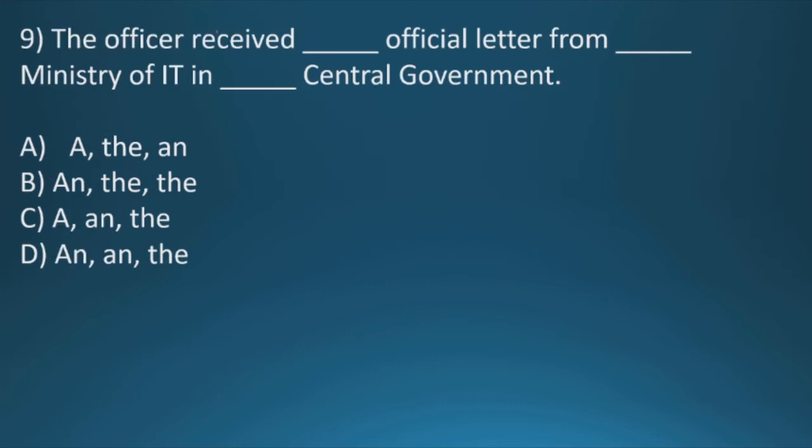Question nine: The officer received dash official letter from dash ministry of IT in dash central government. The correct answer would be: the officer received an official letter, because here it is O which is a vowel, from the ministry of IT because there can be only one ministry of IT, in the central government because there is only one central government. So our correct option will be B, an, the, the.